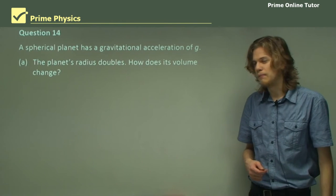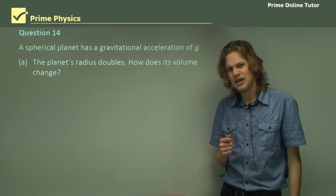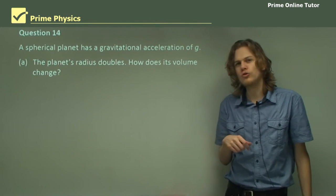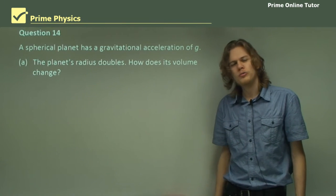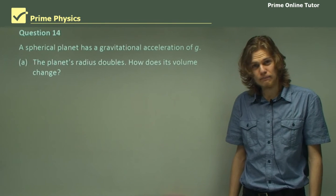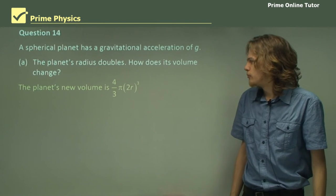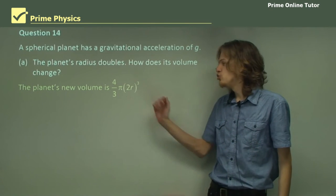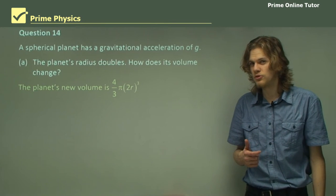Question 14. A spherical planet has a gravitational acceleration of g. Hooray, algebra! So the planet's radius doubles. How does its volume change? So I hope you remember your formula for the volume of a sphere. The planet's new volume will be 4 thirds pi and instead of r cubed, we'll have 2r cubed. Because we've doubled the radius of the sphere. With me so far?